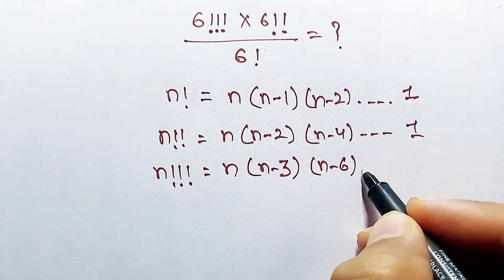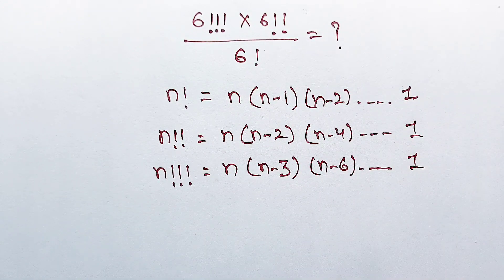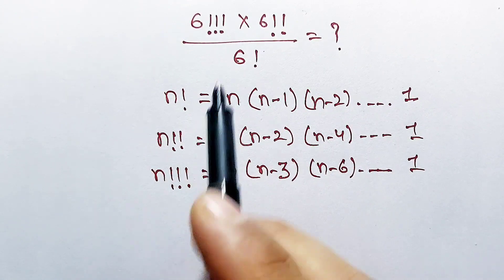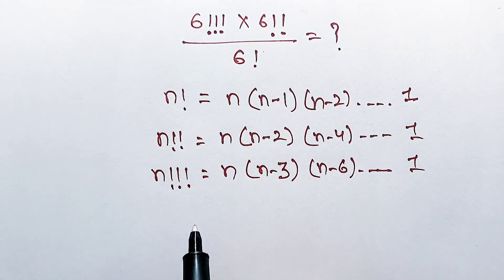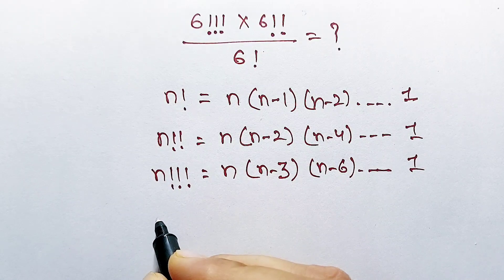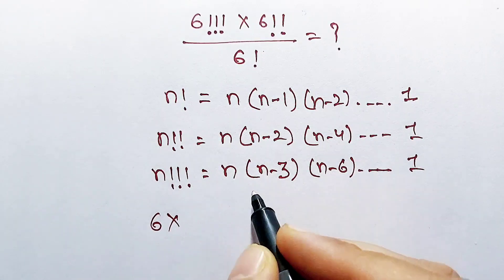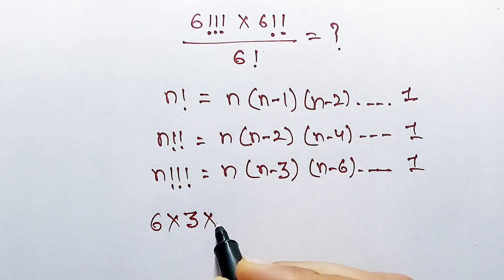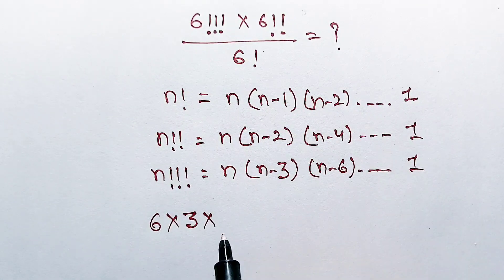Now applying these values in this question we can solve this question easily. Triple factorial of 6 is equal to 6 multiplying 6 minus 3 which is 3, multiplying 6 minus 6 which is 0.